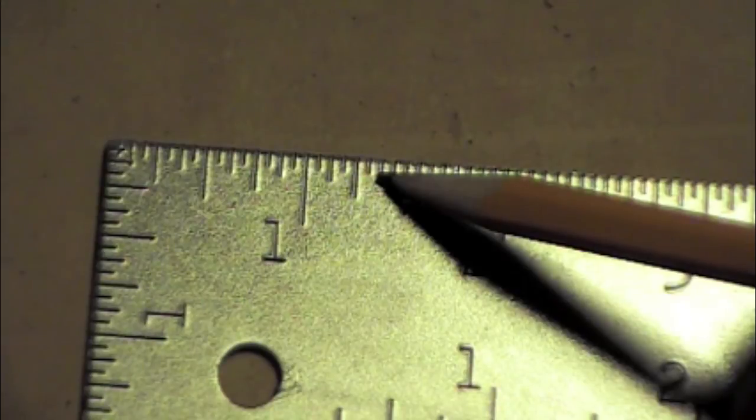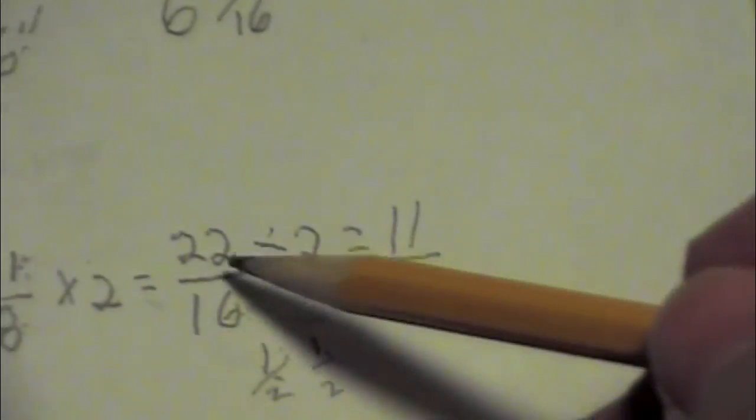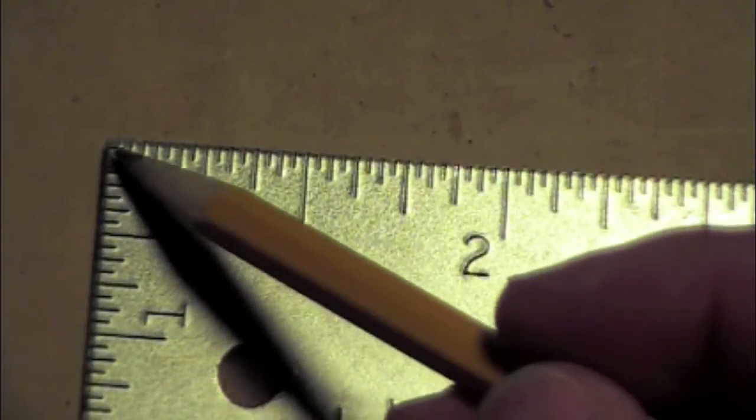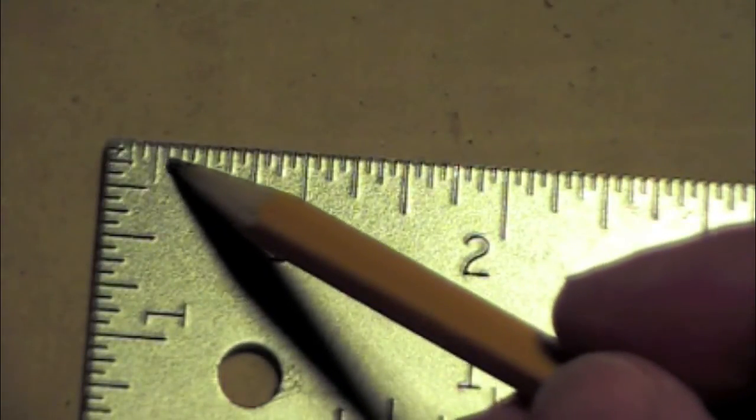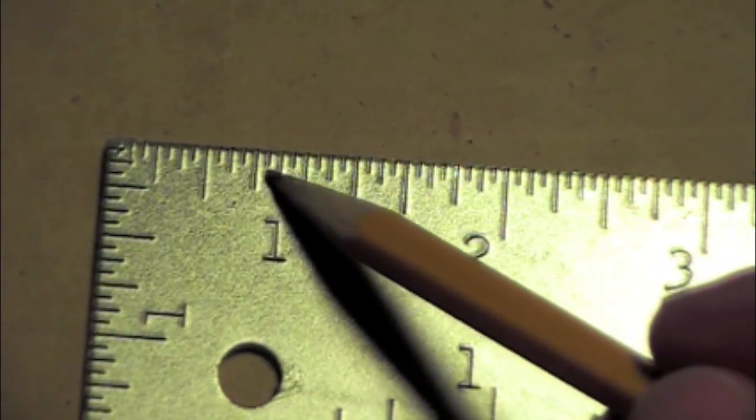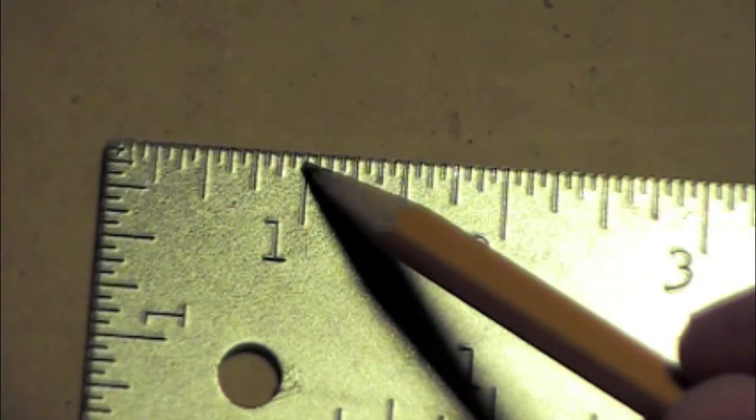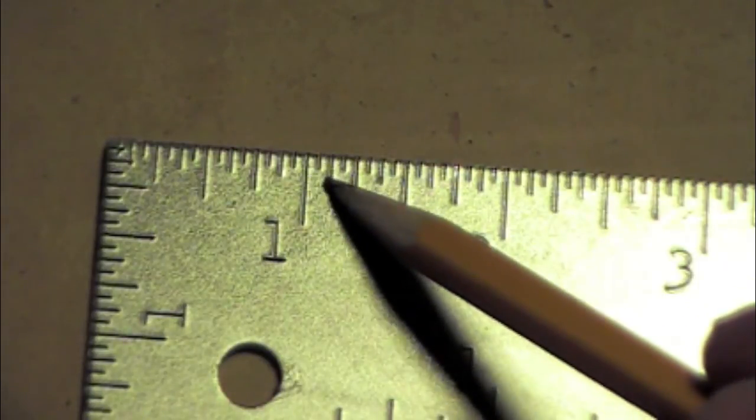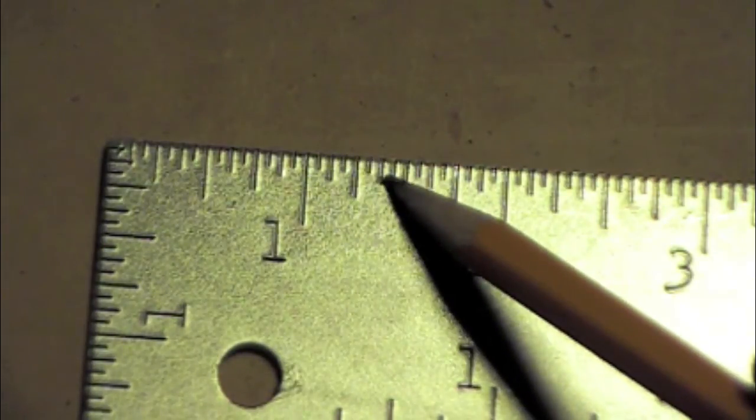Well, to confirm our math over here of twenty-two sixteenths, if we count each tiny line, one, two, three, four, five, six, seven, eight, nine, ten, eleven, twelve, thirteen, fourteen, fifteen, sixteen to one inch, seventeen, eighteen, nineteen, twenty, twenty-one, twenty-two.